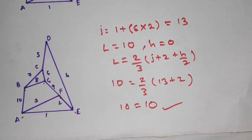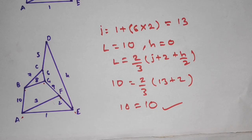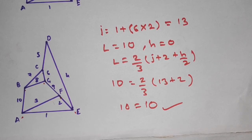This completes the explanation of joints in a kinematic chain: the binary joint, the ternary joint, and the quaternary joint. If you have understood this explanation, please like and share this video with your friends.